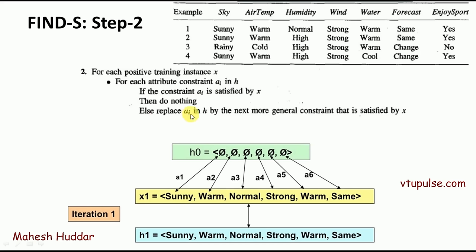We replace ai in H by the next more general constraint that is satisfied by x. Since we currently have null, the next more general value is the specific value from the example: Sunny replaces a1, Warm replaces a2, Normal replaces a3, Strong replaces a4, Warm replaces a5, and Same replaces a6. If we already have a specific value and it doesn't match, that specific value should be replaced with a question mark — I will discuss that at a later stage.